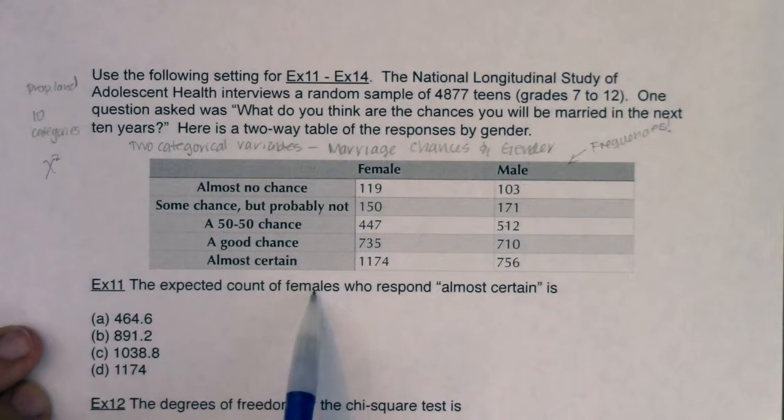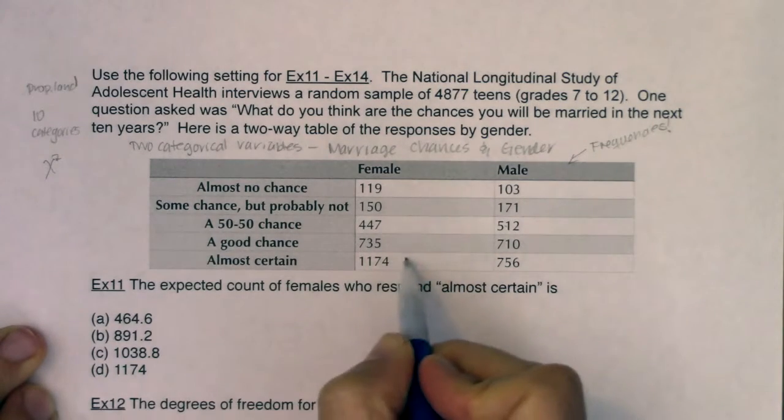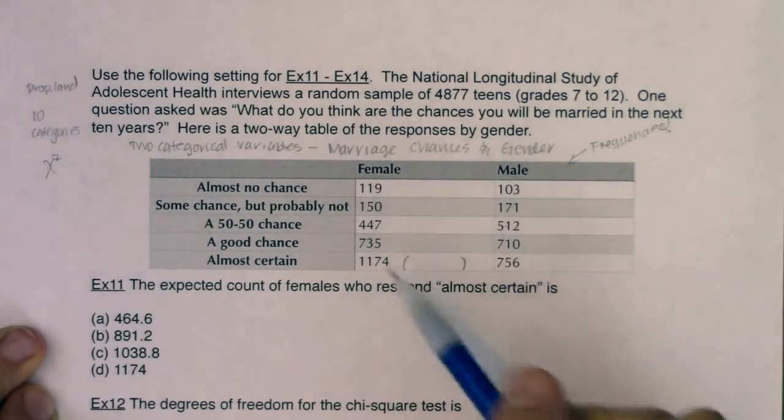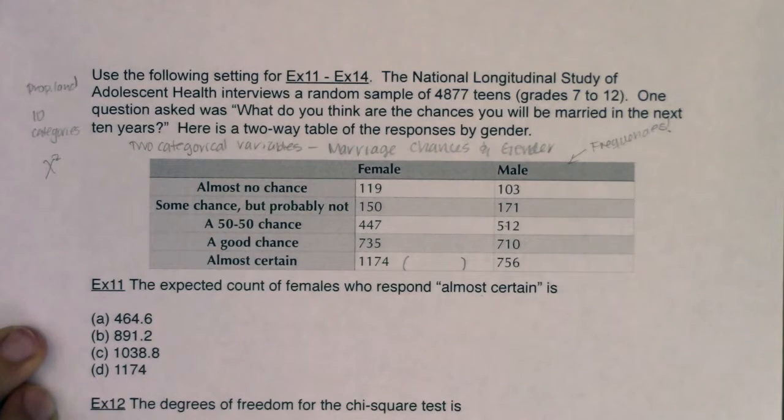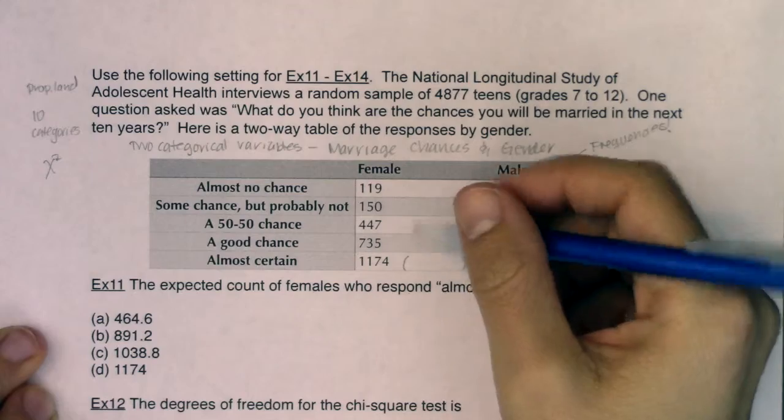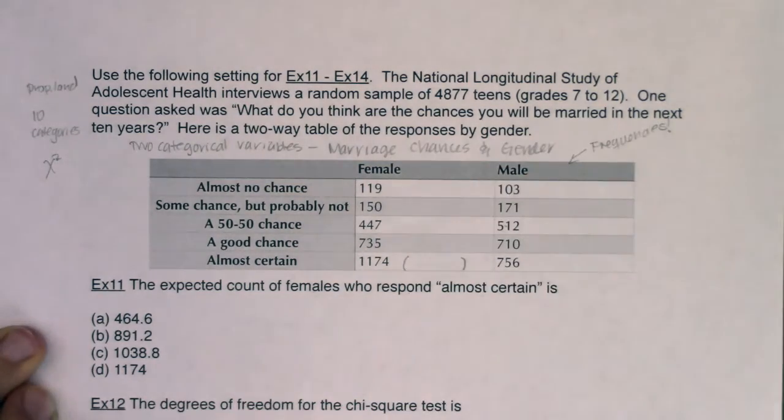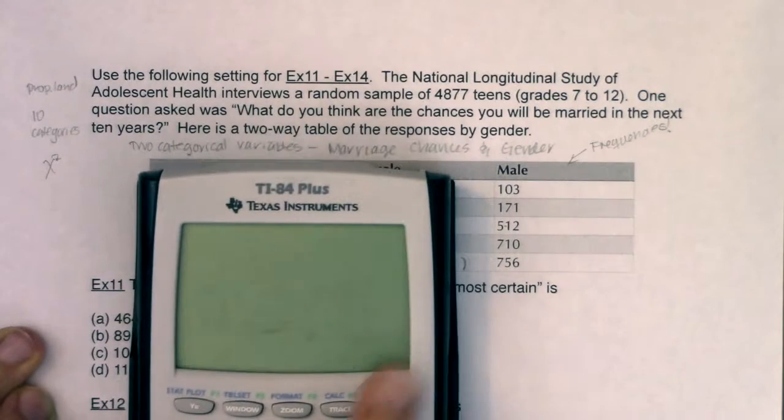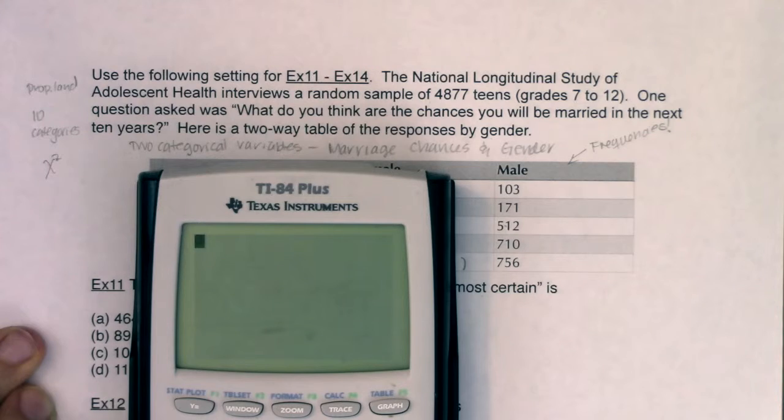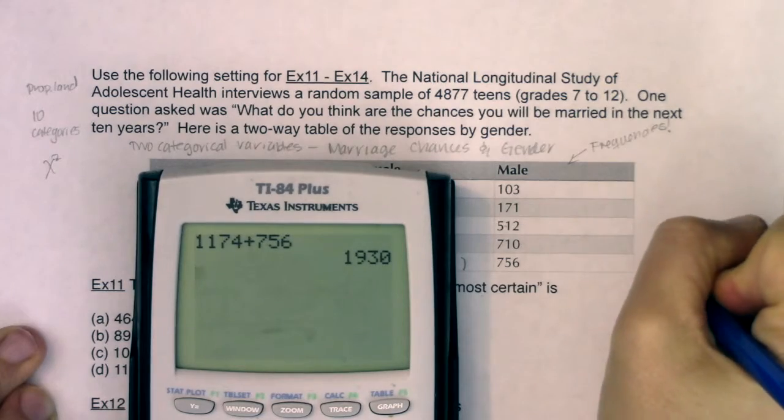It says, the expected count of females who respond almost certain is. So I want females almost certain. And basically, I want the parentheses that are there. Now, you have a couple of options. You could plug this into a matrix, run the chi-squared test, and then see what the individual expected counts are that they would drop into matrix B. I think what I'm going to try and do here is just figure out the row total and the column total, because they're only asking me for one expected count. So for the row total here, they still want me to change my batteries. I got to remember to do that.